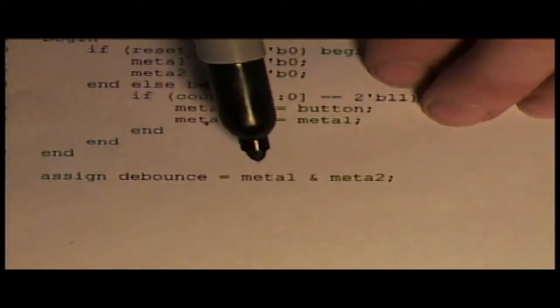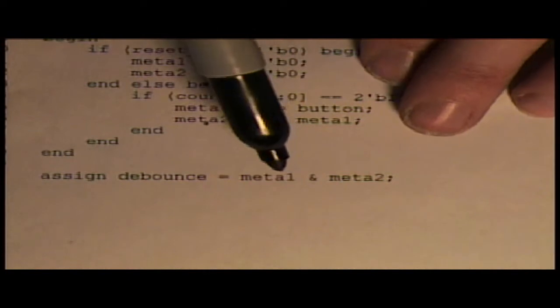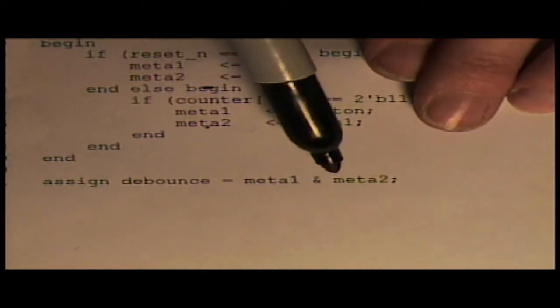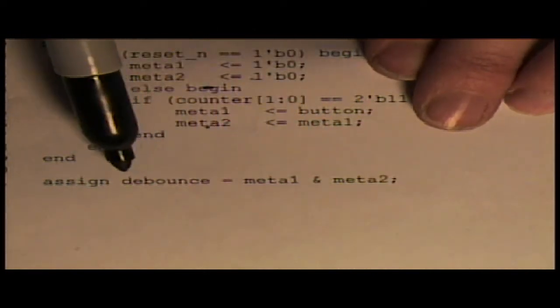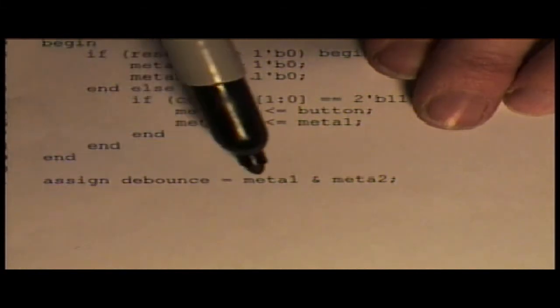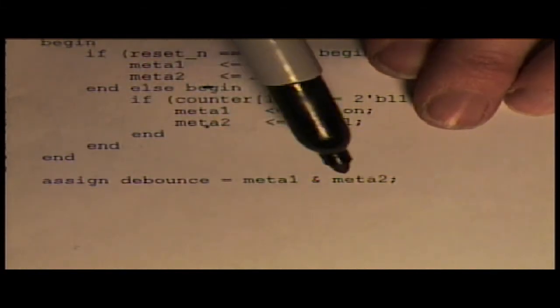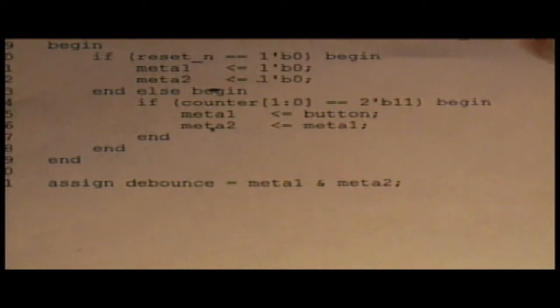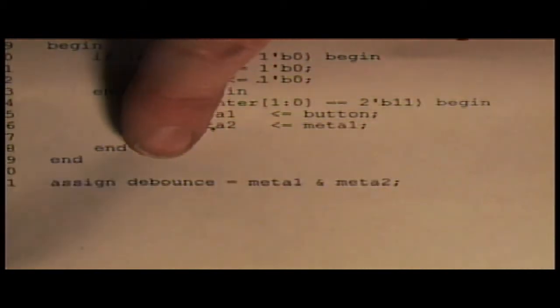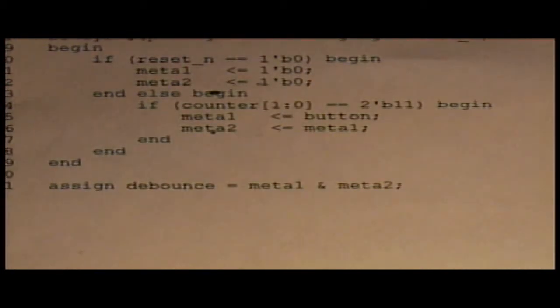And remember the AND gate that I talked about? This is the AND gate. So this is the symbol for AND. And here's my debounced signal out. So meta one and meta two, when they're both one, put that signal to one.